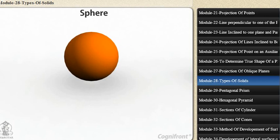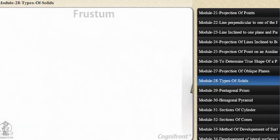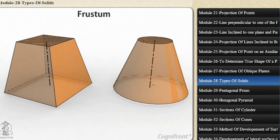Oblique cylinders and cones have their axis inclined to their bases. Frustum. When a pyramid or a cone is cut by a plane parallel to its base, thus removing the top portion, the remaining portion is called its frustum.